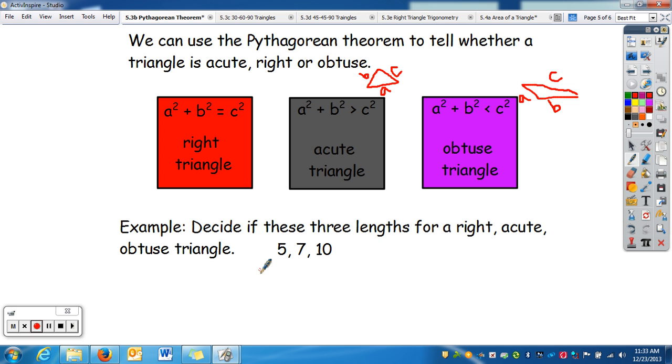So, let's do one example. We're going to decide whether these lengths is a right, acute, or obtuse. So, c is always your bigger length. So, I'm going to go 5 squared plus 7 squared. And then we're going to see how it compares to 10 squared.